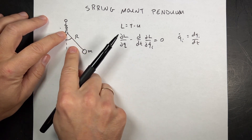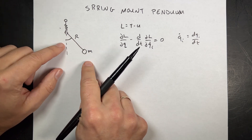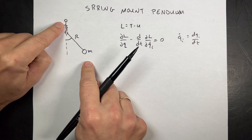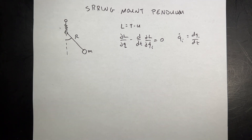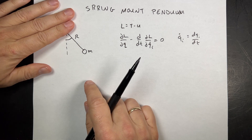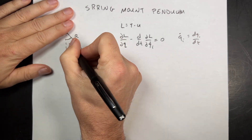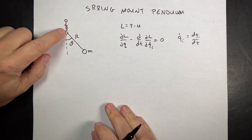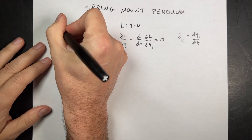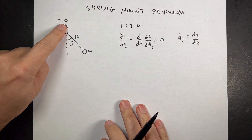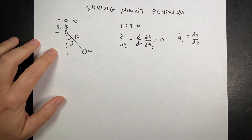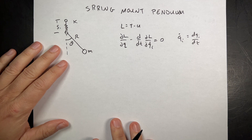Here's the system. I have a pendulum — a mass on a stick — and that stick is connected to a spring, and the spring can only move up and down. The first thing we want to do is ask: how many degrees of freedom? How many variables would I need to completely describe the system? If it was just a pendulum, that would be one — just the angle theta. But now that this can move up and down, I need to describe that too, and I'm going to call it S. So this can move up and down with spring constant K, mass M, and gravity G.